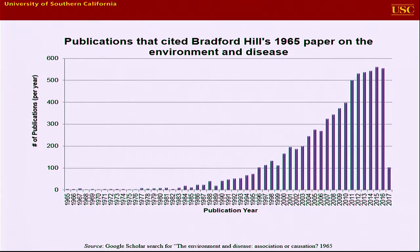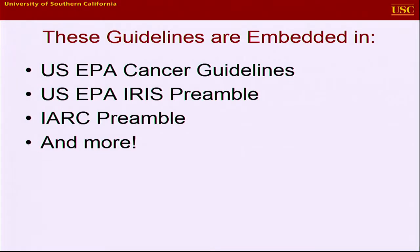It's a little harder to track citations for the Surgeon General's reports, but they are abundantly quoted on the same issues. My point is that what was done more than 50 years ago now essentially remains in use. These guidelines are embedded, for example, in the US EPA cancer guidelines, the IRIS preamble, the IARC preamble, and more. What was elaborated for noncommunicable diseases remains in use and presumably useful, because we are still using them.